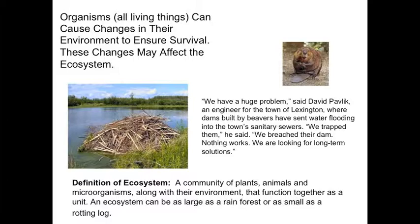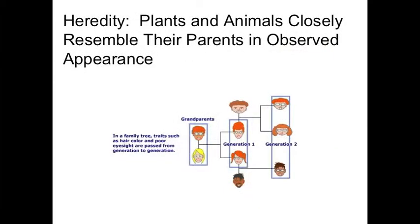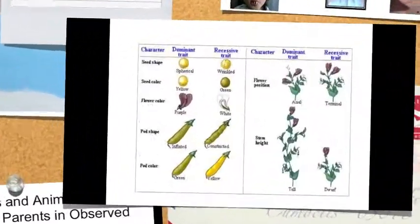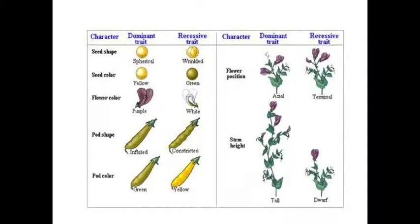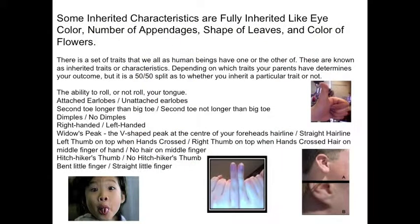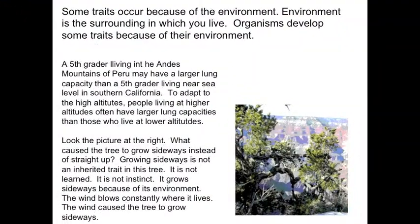Organisms can cause changes in their environment, like this beaver dam. We inherit characteristics from our birth parents. Plants inherit characteristics also. Some inherited characteristics are fully inherited, like eye color. Some traits occur because of the environment. Organisms develop traits in response to their environment.